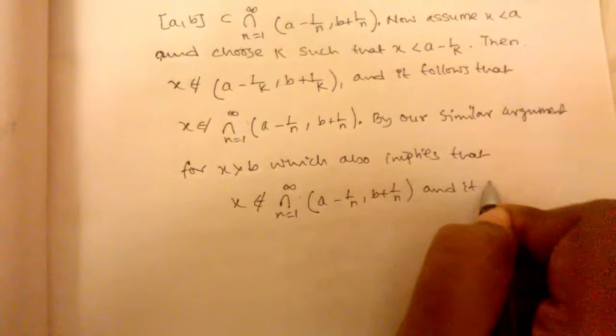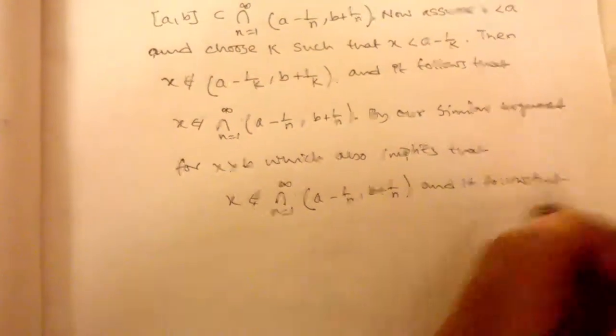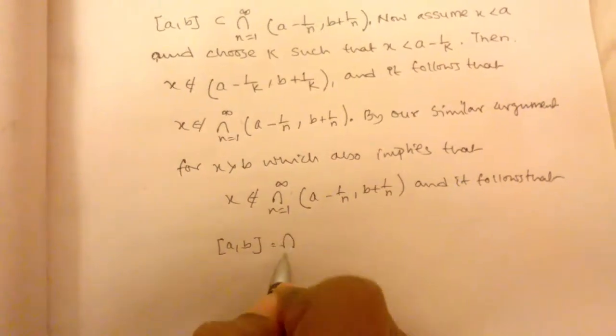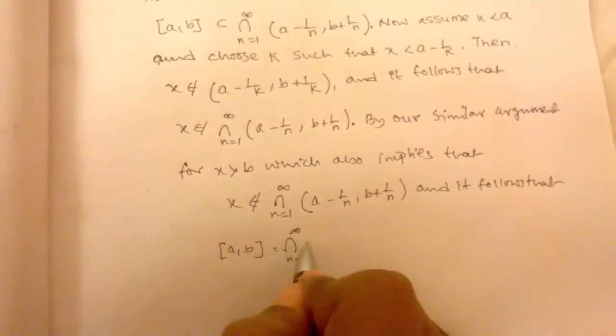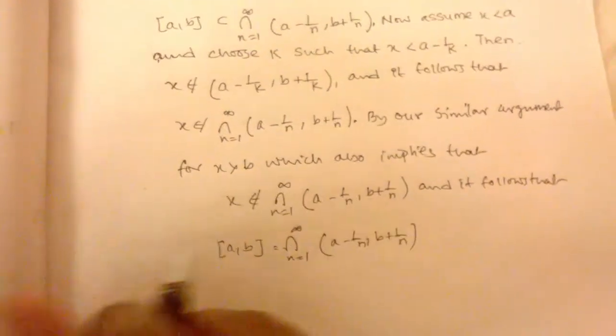And it follows that the closed interval [a,b] equals the intersection from n equals 1 to infinity of (a - 1/n, b + 1/n).